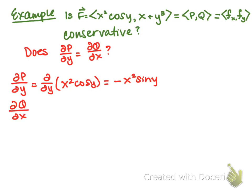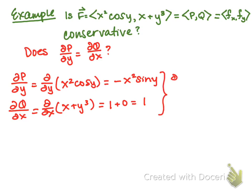Then dQ/dx is the derivative with respect to x of x + y³, which equals 1. Since negative x² sin y does not equal 1, these are obviously not equal, and therefore F is not conservative.